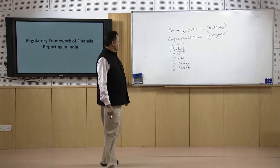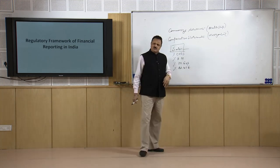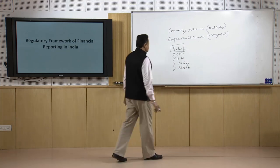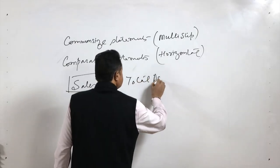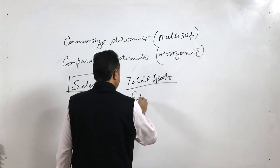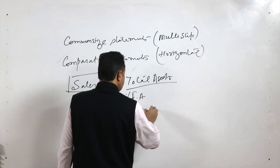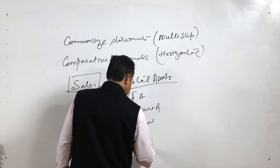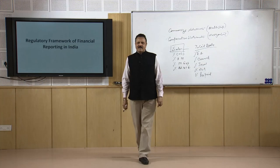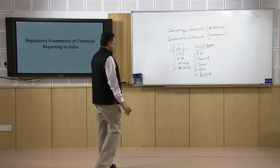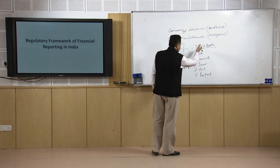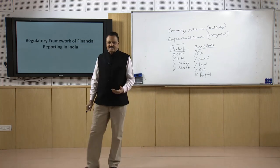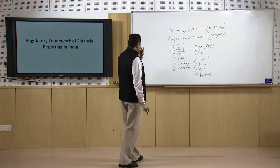For the balance sheet you can use the comparative statement approach, but you can also apply common size analysis. In the balance sheet, you take total assets as the common figure and then express fixed assets, current assets, investments, loans and advances, and prepaid expenses each as a percentage of total assets. This way you can easily see what percentage of total assets is fixed assets and what percentage is current assets — ideally current assets should be as low as possible and fixed assets should be high.